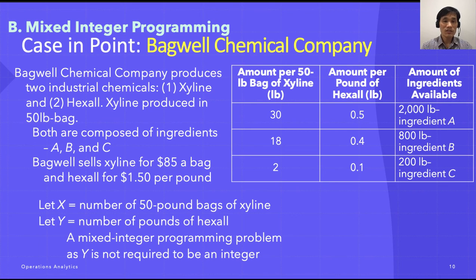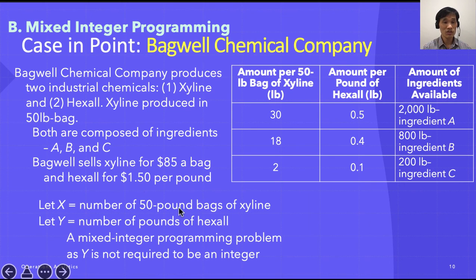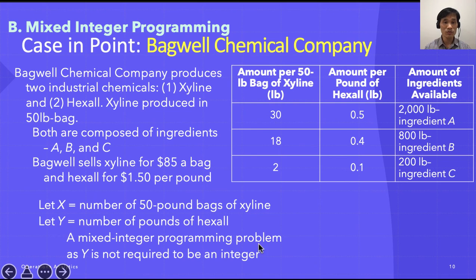Let us define the variables. X is the number of 50-pound bags of Xylene, and Y is the number of pounds of Hexol. In mixed integer programming, the first variable X is an integer — you don't have half bags or a third of a bag, only whole bags. However, Hexol can be processed pound by pound, so it is a continuous variable. Xylene is an integer variable and Hexol is continuous, making this a mixed problem.